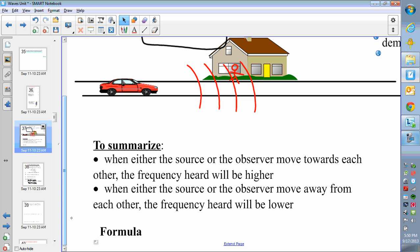So, both, whether you're moving towards, whether it's the source or the observer that's moving, if they go towards each other, the frequency you hear will be higher than the frequency produced. It doesn't change what frequency is actually being made by the car. It's just changing the frequency that the people are hearing. And so, conversely, if either the source or the observer move away from each other, the frequency heard will be lower.